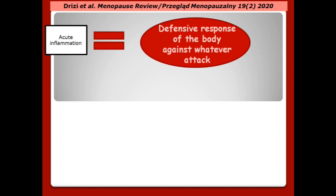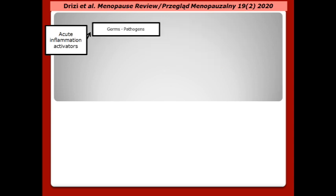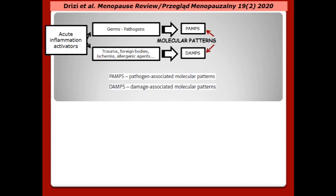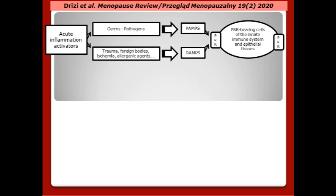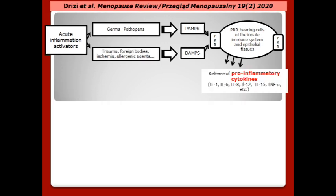Acute inflammation is the defensive response of the body against whatever attack — whether the attack is mediated by germs or by non-microbial agents such as trauma, foreign bodies, ischemia, or allergenic agents. Both cause the release of molecular patterns that trigger the immune system by binding to specific receptors termed Pattern Recognition Receptors (PRR), expressed on the surface of some cells whose role is to alert the immune system about a threat. These cells subsequently send molecular signals termed pro-inflammatory cytokines, which start the inflammatory response.